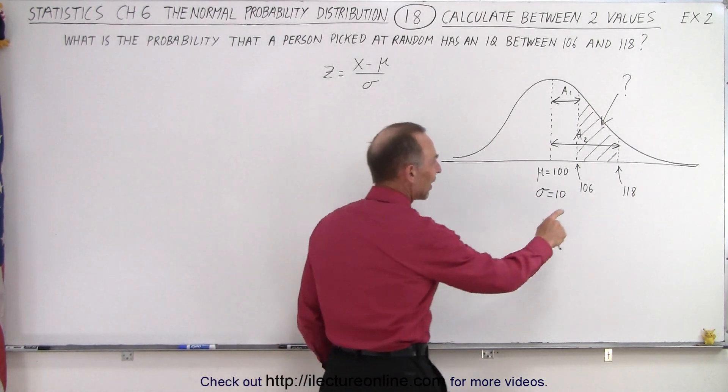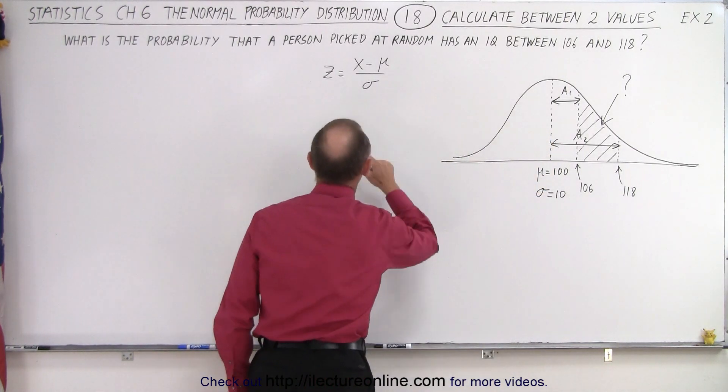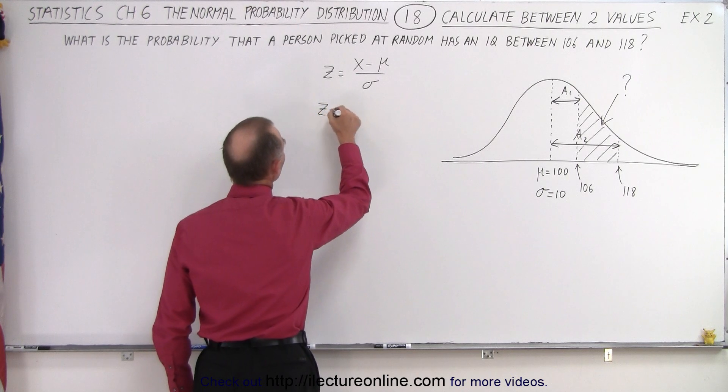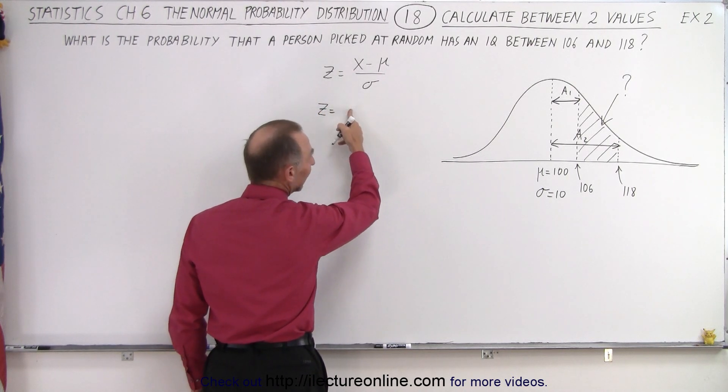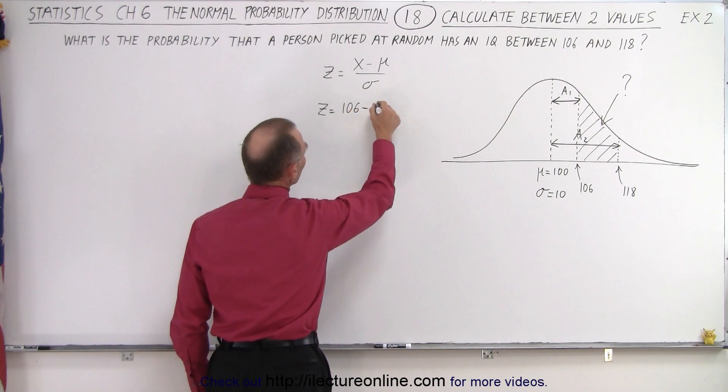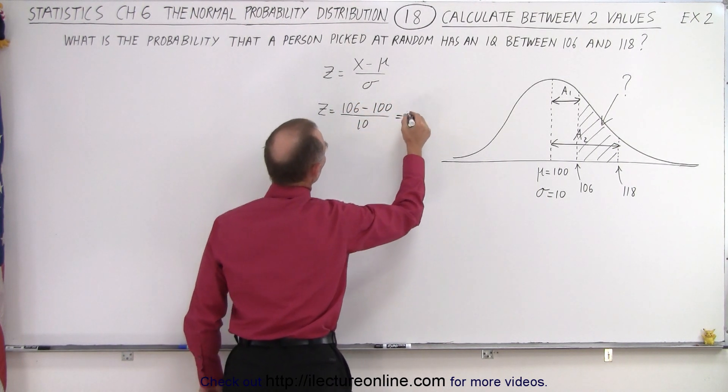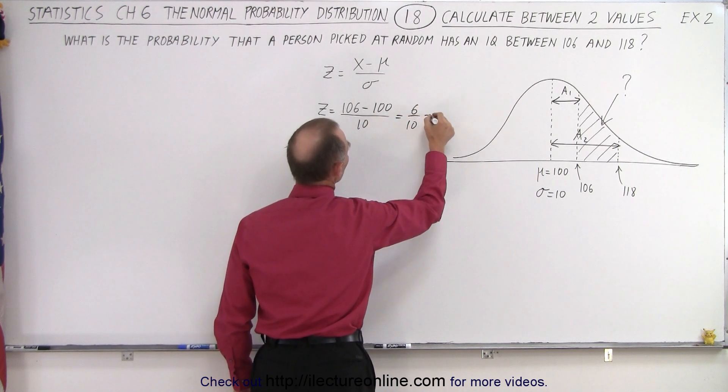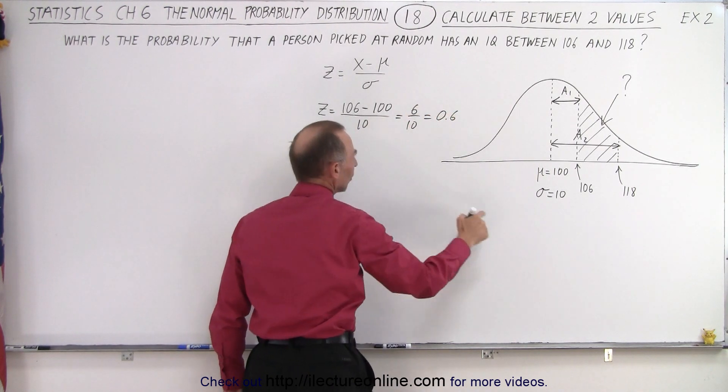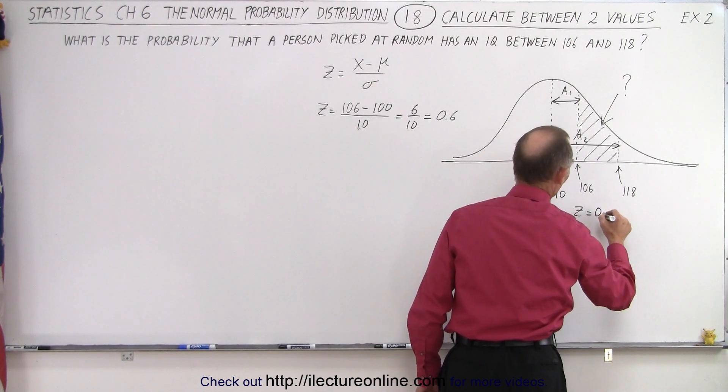But again we first need to find the z values of both of these numbers and here's the equation. So we have z is equal to x which, let's try 106, minus the mean which is 100, divided by sigma which is 10. That equals 6 divided by 10 which is 0.6. So this number here corresponds to z equals 0.6.